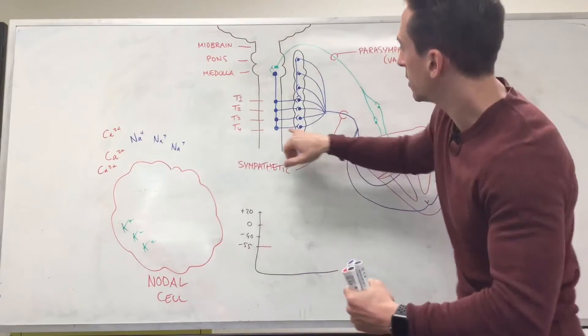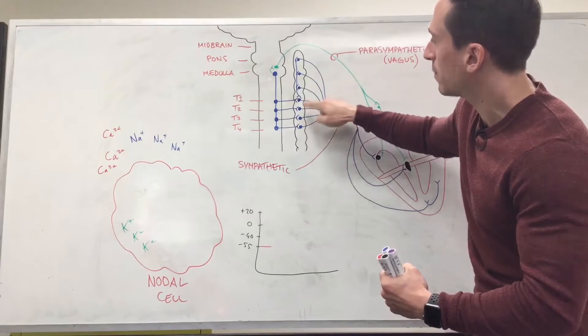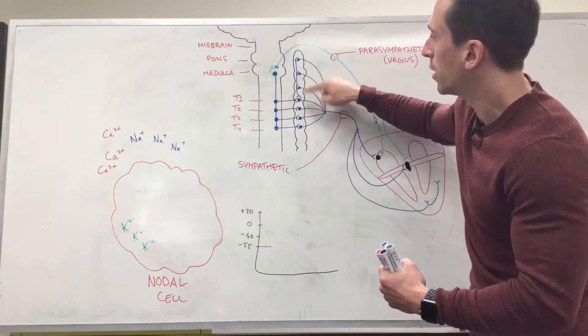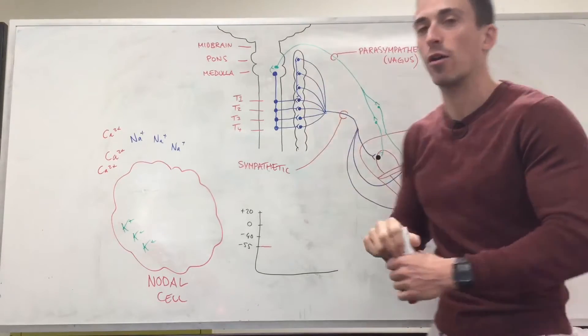You can see that happening here. The first neuron shoots out T1 to T4 and then synapses with various cell bodies of the next sympathetic neuron here at the chain at the paravertebral ganglia.